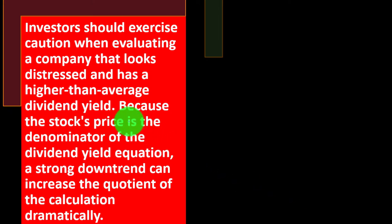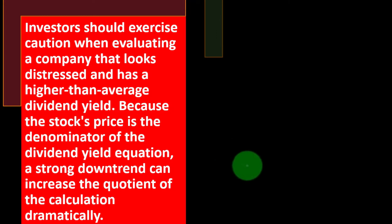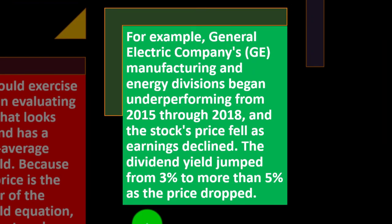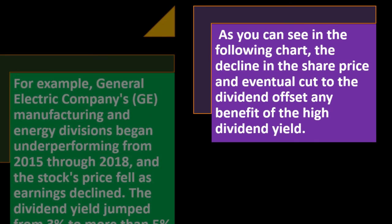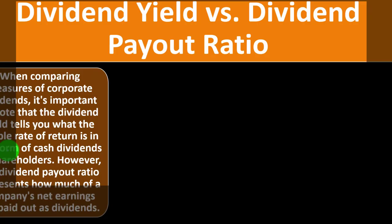Investors should exercise caution when evaluating a company that looks distressed but has a higher-than-average dividend yield. Ask whether the high yield is simply due to a sharply declining stock price — since stock price is the denominator of the dividend yield equation, a strong downtrend can dramatically increase the quotient. For example, General Electric (GE) began underperforming from 2015 through 2018, the stock price fell as earnings declined, and the dividend yield jumped from 3% to more than 5% as the price dropped. As shown in the following chart, the decline in share price and eventual cut to the dividend offset any benefits of the high dividend yield.